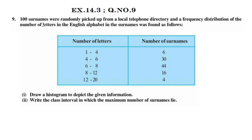100 surnames were randomly picked up from a local telephone directory and a frequency distribution of the number of letters in the English alphabet in the surname was found. We have randomly picked 100 surnames and constructed a frequency distribution.